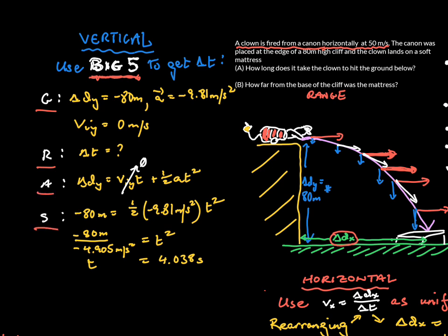Two very important parts: Delta D Y is going to be negative 80. Remember our convention - negative is downward, positive is upward. The acceleration would also be negative, it's our standard value of -9.81 m/s².